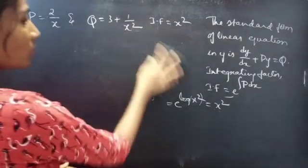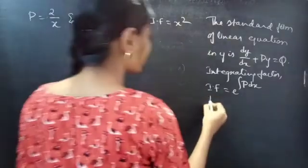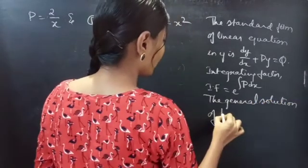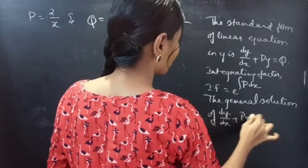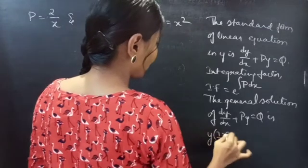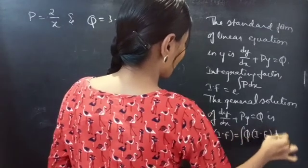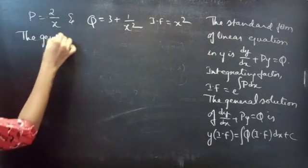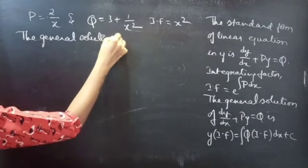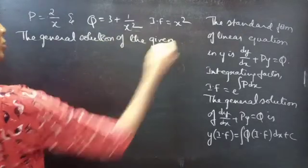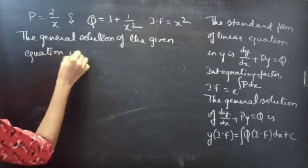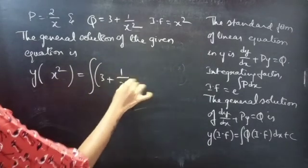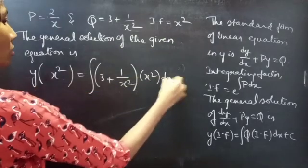Now we find the general solution. We know that the general solution of the linear equation dy by dx plus P times y equals Q is given by y times the integrating factor equals integral of Q times the integrating factor dx plus c. Using this formula, the general solution is y times x squared equals integral of Q, which is 3 plus 1 by x squared, times the integrating factor x squared, dx plus c.